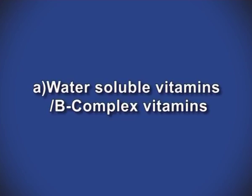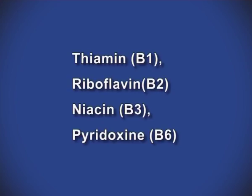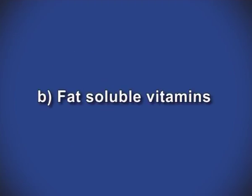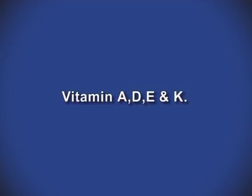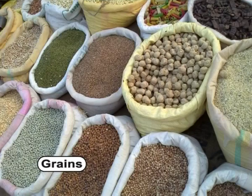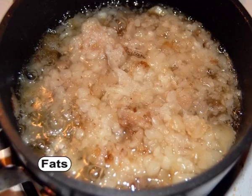Water-soluble vitamins or B-complex vitamins include thiamine B1, riboflavin B2, niacin B3, pyridoxine B6, folate, cyanocobalamin B12, pantothenic acid, biotin and vitamin C. Fat-soluble vitamins include vitamins A, D, E and K. Vitamins are found in a wide variety of foods like fruits, vegetables, grains, legumes, dairy products, meats and fats.